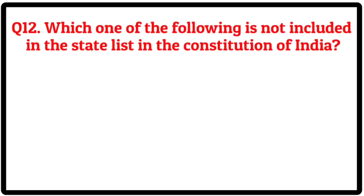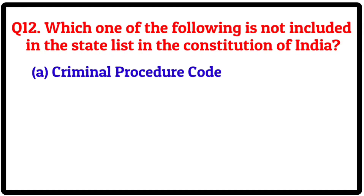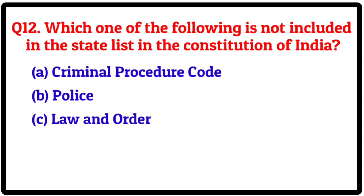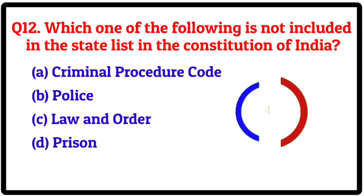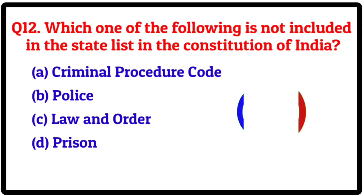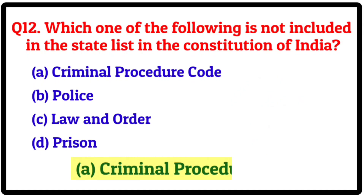Question 12. Which one of the following is not included in the state list in the Constitution of India? Option A: Criminal Procedure Code. B: Police. C: Law and Order. D: Prison. Correct answer is A: Criminal Procedure Code.